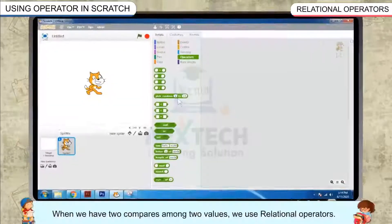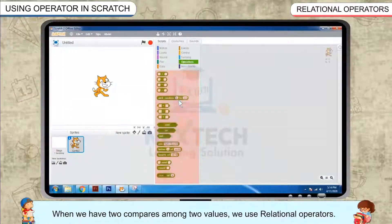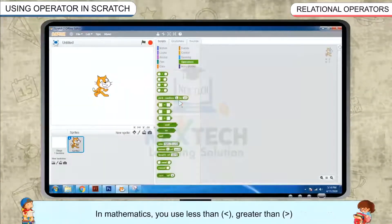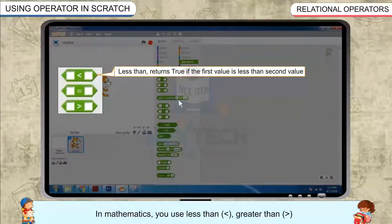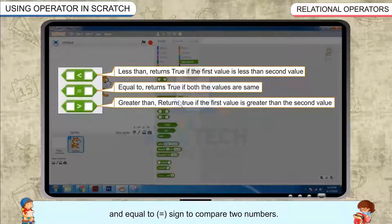Relational Operators. When we have to compare among two values, we use Relational Operators. In Mathematics, you use less than, greater than and equal to sign to compare two numbers.